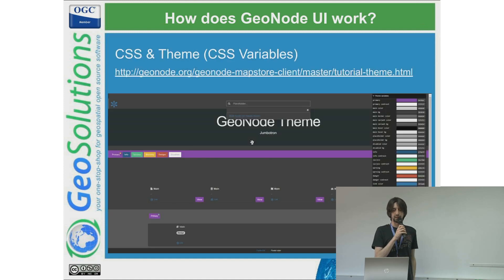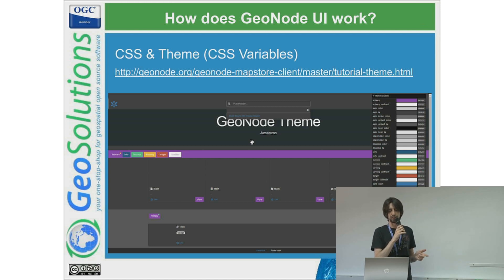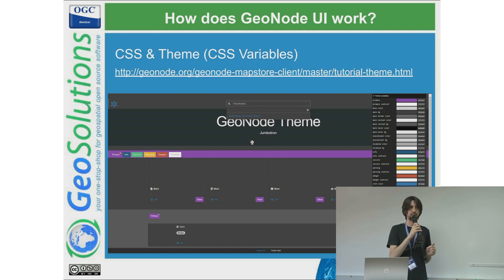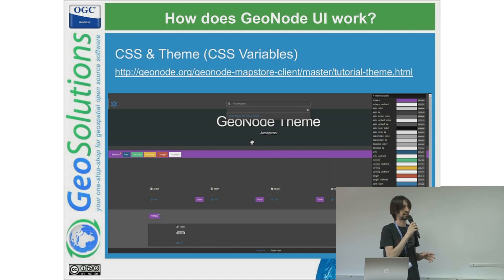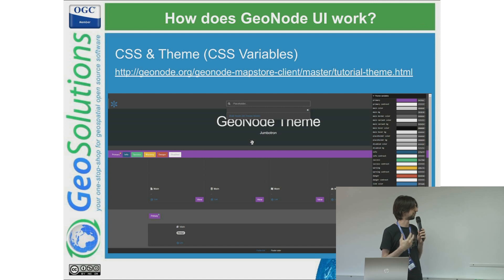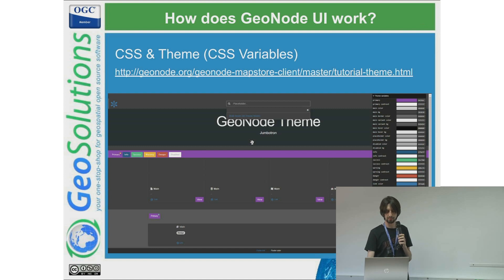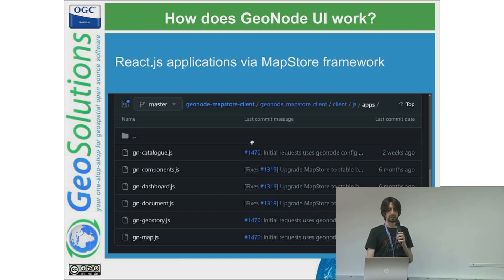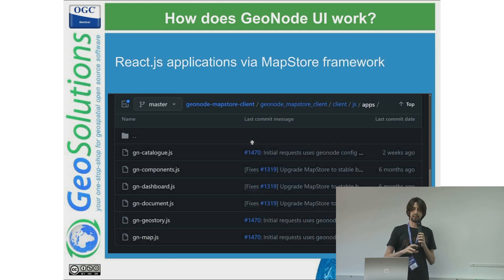Here is the theming. If you want to create your own theme you can go to these links — we created a sort of static page where you can select the variables of the interface. Then there is a 'get snippet' button; clicking on that you will receive a CSS selector that you can put in a static CSS file, and the GeoNode theme will receive those variables as information to replace the theme.